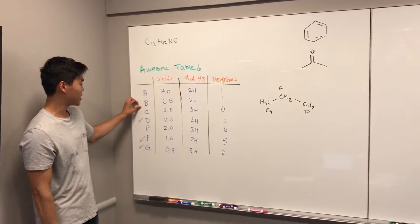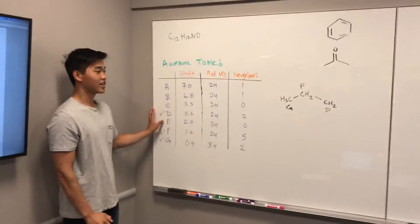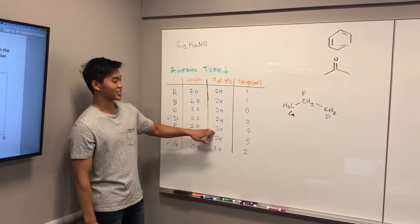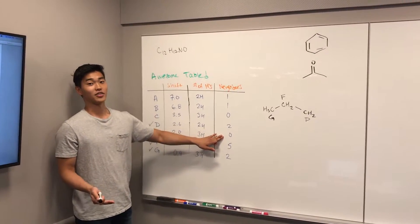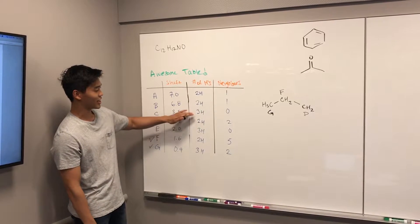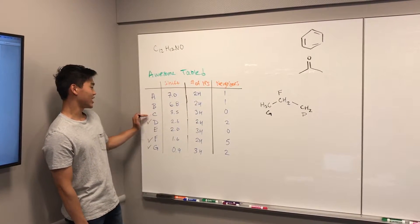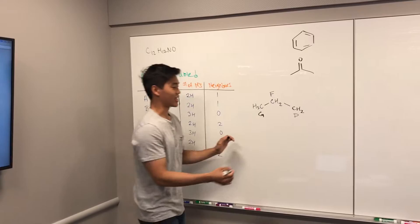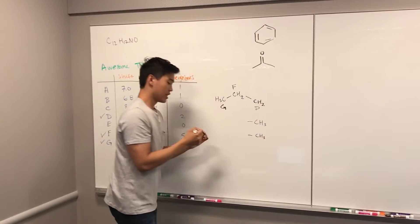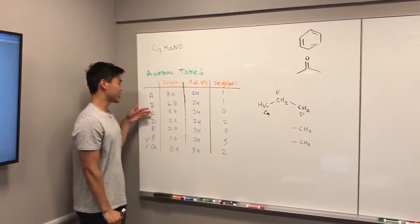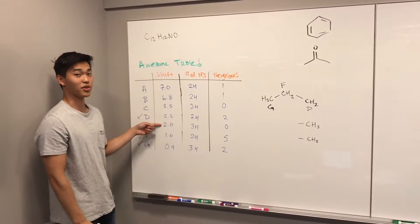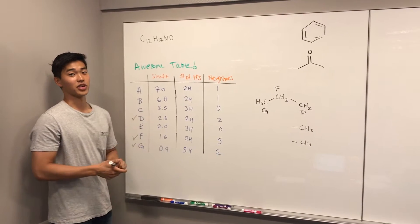That leaves us with A, B, C, and E. From the iconic fragment page, three hydrogens with zero neighbors equals a methyl group. We can actually see that we have two of those right here — C and E. It's important to keep their shifts in mind: 2.0 and 3.5, because they mean different things. I'll check off these two because we have them done.